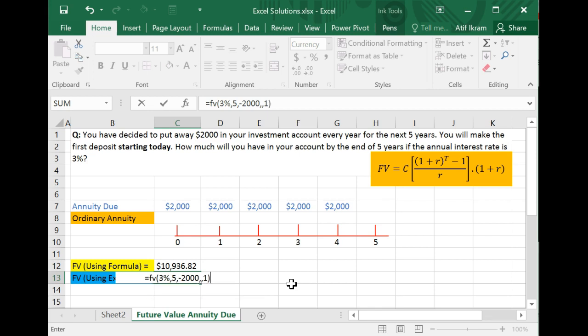Close the bracket and bada bim, bada boom, you get $10,936.82, which is exactly the answer that you would have gotten using the formula as well. Of course, as you can see, Excel is far more straightforward if you're implementing it right and easier to do. And so this is how you can determine the future value of any annuity due in Excel.